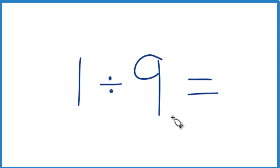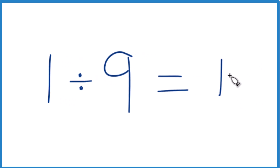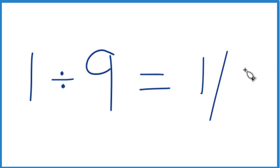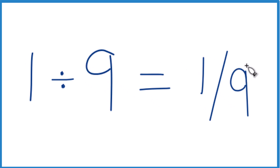Let's divide 1 by 9 and see what we get. You could just say 1 over 9 — you could write this as a fraction, that's 1 ninth. That's the same as 1 divided by 9. That works, very accurate.